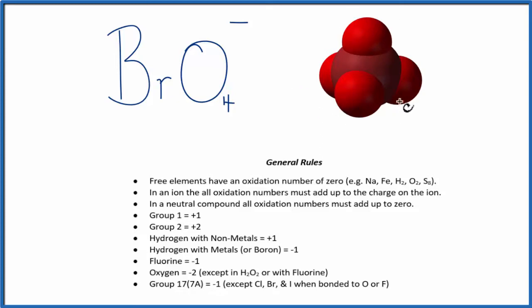So here's our perbromate ion, and the red, those are the oxygens, we have 1, 2, 3, 4, and that dark red, that's the bromine.